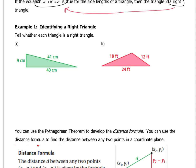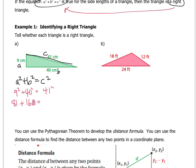The way we can prove whether something is a right triangle is by using the Pythagorean theorem: a squared plus b squared equals c squared, where the hypotenuse must be the c value, but it doesn't matter which leg is a or b. So let's plug in: 9 squared plus 40 squared equals 41 squared. That gives us 81 plus 1,600, and 41 squared is 1,681.